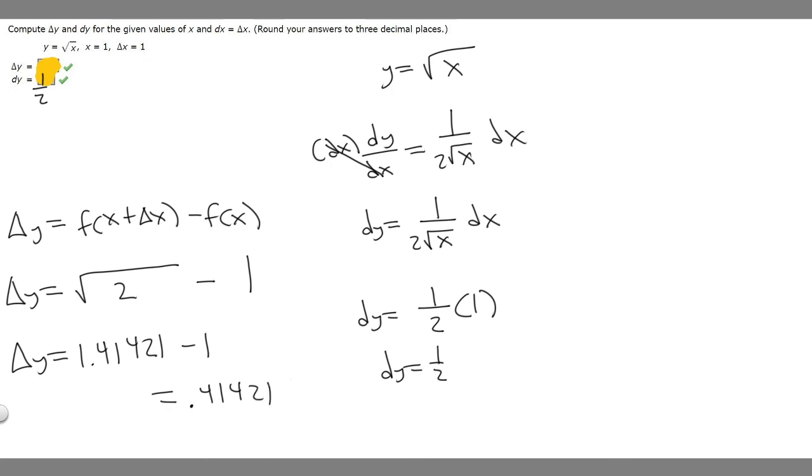And so what we're trying to do is round. So we have to round to three decimal places, so we round here. But 2 is smaller than 5, so we don't round. So it's just going to be 0.414. So yeah, these are going to be the answers to this problem.